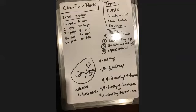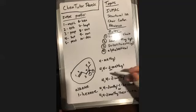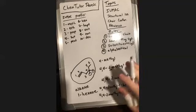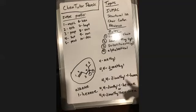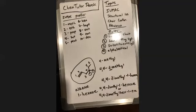Question: does the multiplying prefix contribute to alphabetical order? The answer is no. If you had an ethyl group with a 'di' prefix, ethyl would still come first — the 'di' doesn't matter. Similarly, 'tri' and 'tetra' prefixes don't factor into alphabetical ordering. Only the first letter of the actual substituent name counts.